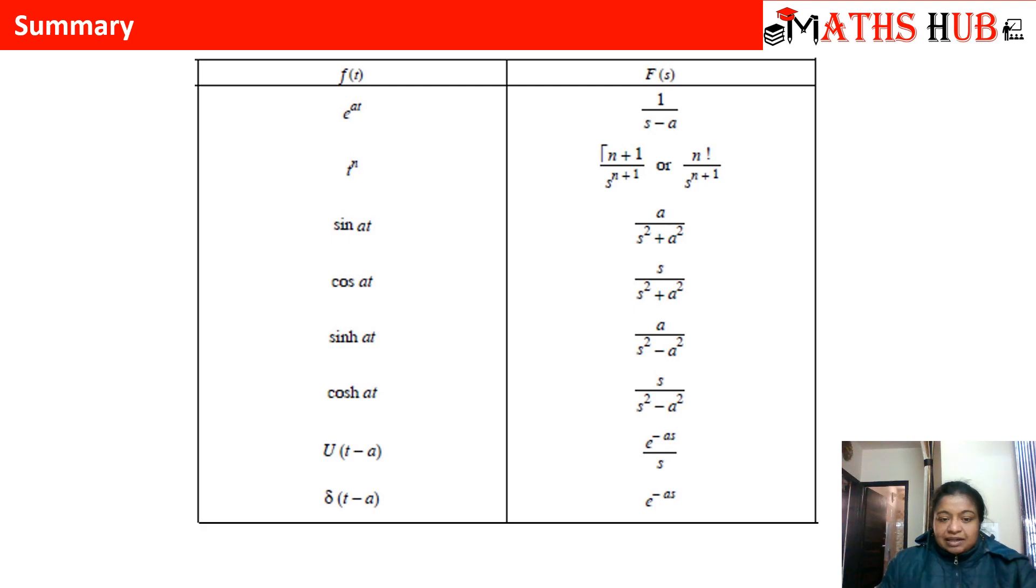You can see that the first formula says that when we have an exponential function, its Laplace transform is 1 upon s minus a. When we have t to the power n, powers of n, then the Laplace transform is n factorial upon s raised to power n plus 1. And sometimes it is also written as capital gamma function n plus 1 divided by s raised to power n plus 1. So here you can see that n factorial is nothing but the capital gamma n plus 1 function.